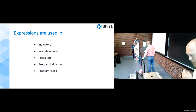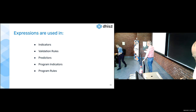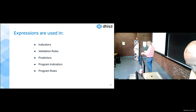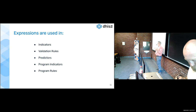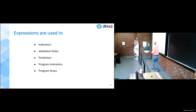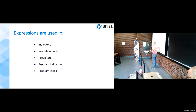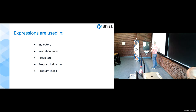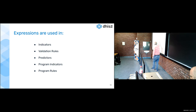We've covered the basics of predictors. Now we'll talk about other expressions. Expressions are a common element in DHIS2 for indicators, validation rules, predictors, program indicators, and program rules. Program rules are in the process of being refactored. Mostly we're going to talk about new functions for indicators, though some expression functions apply to a wide range of expression types.